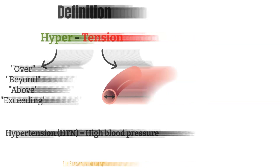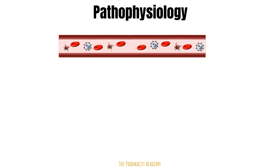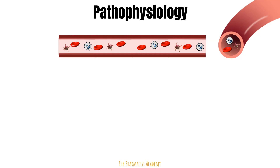Let's learn more about blood pressure and the changes in the body that can cause it to increase. Normally, blood flows through the vessels to different parts of the body. The main function is to transport oxygen and nutrients. Blood contains red blood cells, white blood cells, and platelets that also have their own functions. Just think of it as water flowing through a pipe.